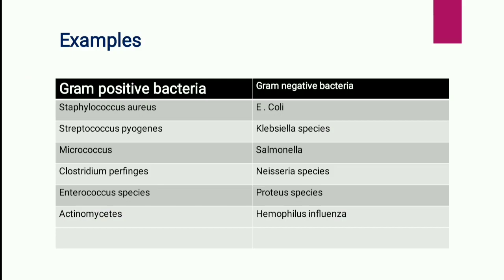Some examples: gram-positive bacteria include Staphylococcus aureus, Streptococcus pyogenes, Micrococcus, Clostridium perfringens, Enterococcus species, and Actinomycetes. Gram-negative bacteria include E. coli, Klebsiella,